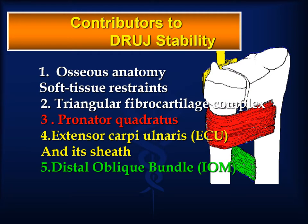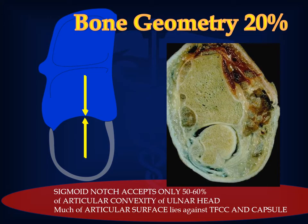Contributors to distal radial ulnar joint instability are essentially five: osseous anatomy; soft tissue restraints including the triangular fibrocartilage complex, the pronator quadratus, the extensor carpi ulnaris and its underlying sheath, and the distal oblique bundle. Bony geometry contributes to only about 20% of such stability. In fact, the sigmoid notch accepts only 50 to 60% of the articular convexity of the ulnar head, and much of the articular surface lies against the triangular fibrocartilage and capsule.